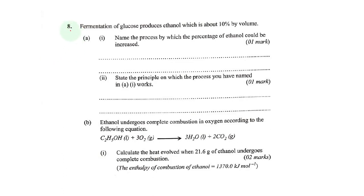Let us now have a look at question 8. Fermentation of glucose produces ethanol, which is about 10% by volume. Name the process by which the percentage of ethanol could be increased. So if our ethanol is 10% by volume, that means we have the other remaining 90% probably water, because during fermentation of glucose, it shall produce ethanol and water.